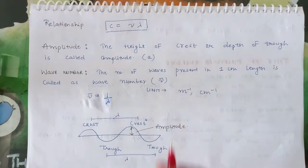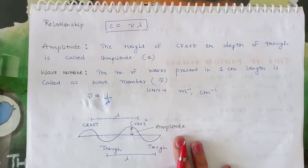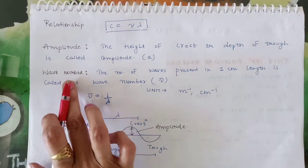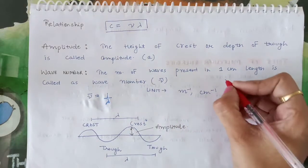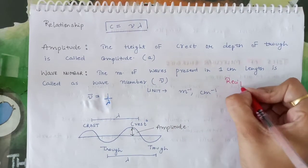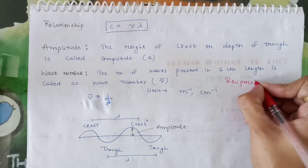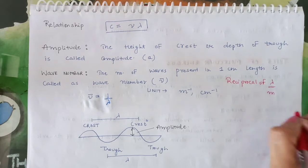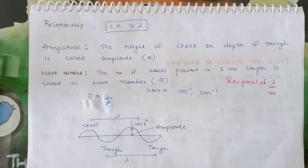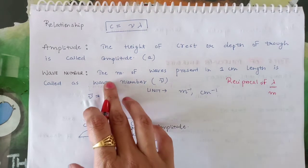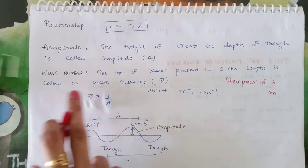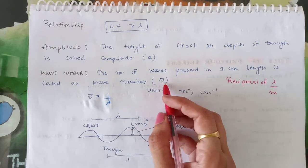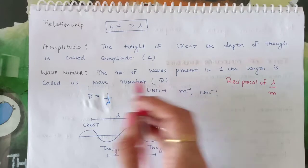Now, looking at the diagrammatic representation: the maxima of any electromagnetic wave are the crests, and the minima are the troughs. The distance between any two consecutive crests — that is lambda (wavelength). Similarly, the distance between any two consecutive troughs is also the wavelength. Next, wave number is the reciprocal of wavelength. Its unit is meter inverse or centimeter inverse. Mu represents frequency; mu bar represents wave number.